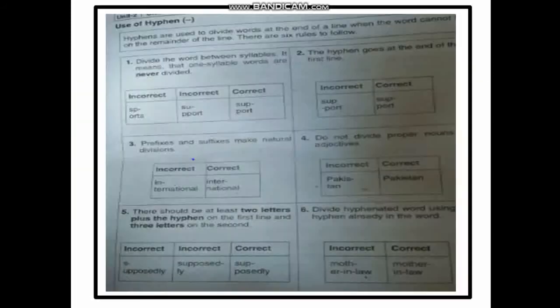The next small topic is about the usage of hyphens. Hyphens are used to divide words at the end of a line when the word cannot fit on the remainder of the line. There are six rules to follow. Rule one: divide the word between syllables. One-syllable words are never divided.